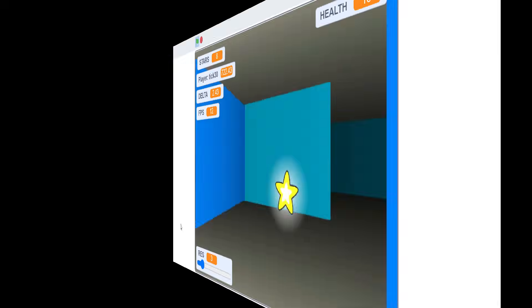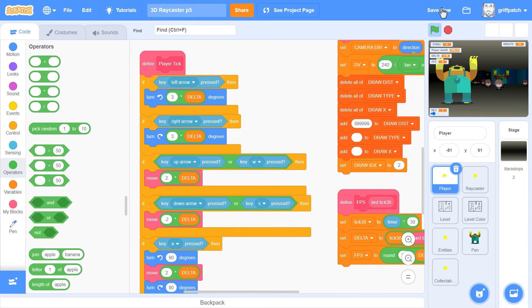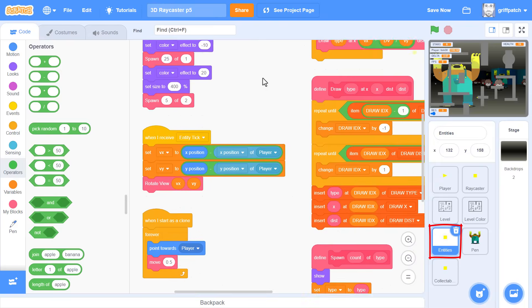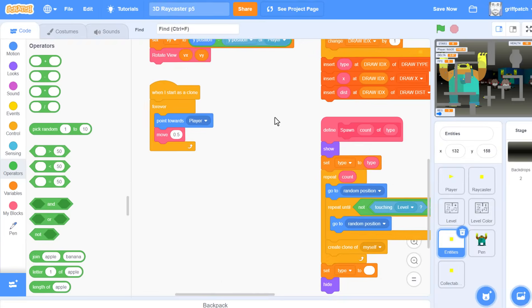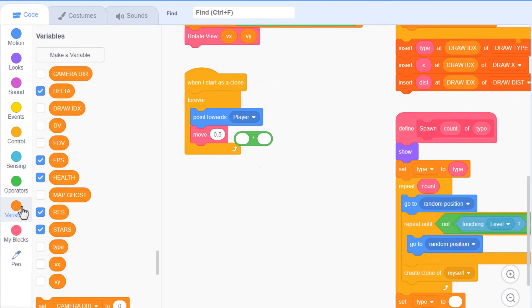Of course, you may now feel a bit sorry for these enemies in the game, as they have not benefited from the same delta speed boost. If you have enemies, then we can fix this in the same way. Click into the entities sprite and find the when I start as clone script. And we just replace the move 0.5 with 0.5 multiplied by delta.